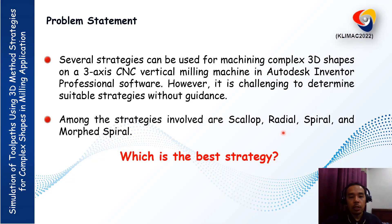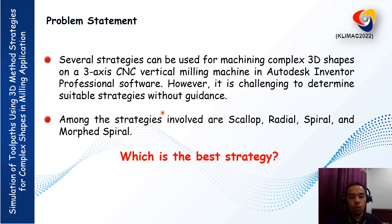In the problem statement, several strategies can be used for machining complex 3D shapes on a 3-axis CNC vertical milling machine in Autodesk Inventor Professional software. However, it is challenging to determine suitable strategies without guidance. Among the strategies involved are Scallop, Radial, Spiral, and Mop Spiral. The question is: which is the best strategy to choose?